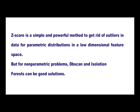Z-score is a simple and powerful method to get rid of outliers in data for parametric distributions in a low-dimensional feature space. But for non-parametric problems, DBSCAN and isolation forest can be a good solution. We will see them in detail.